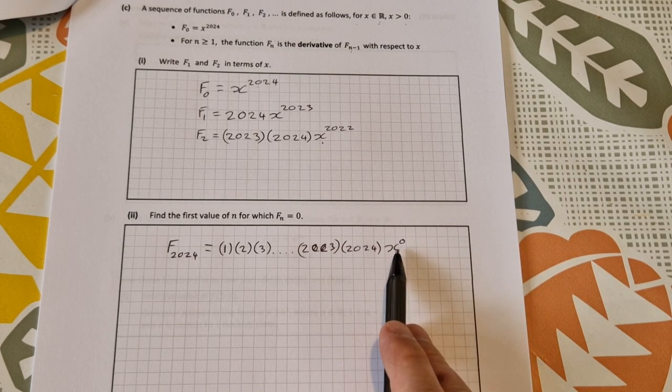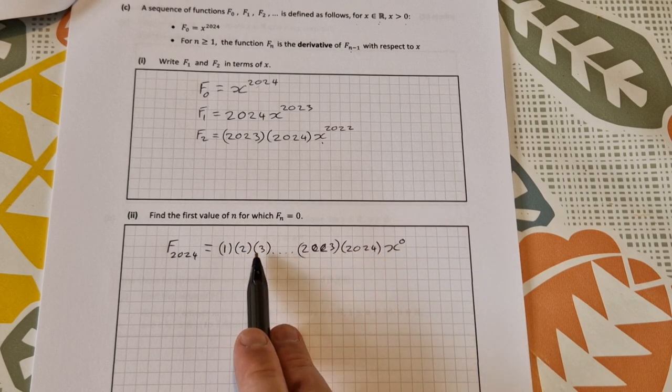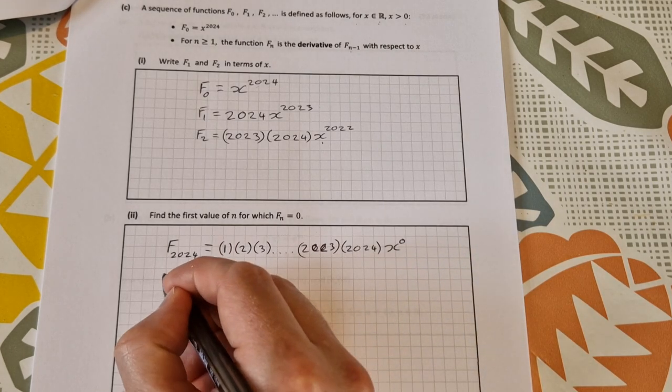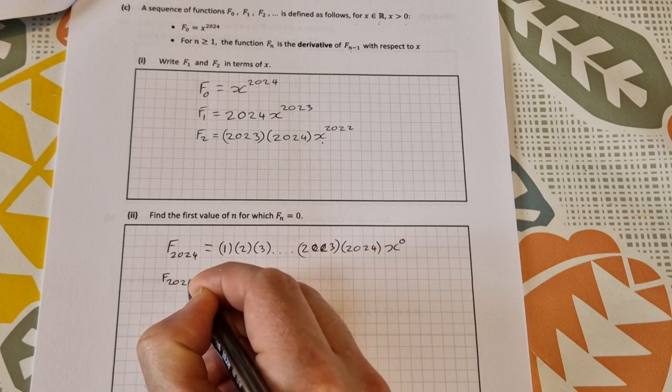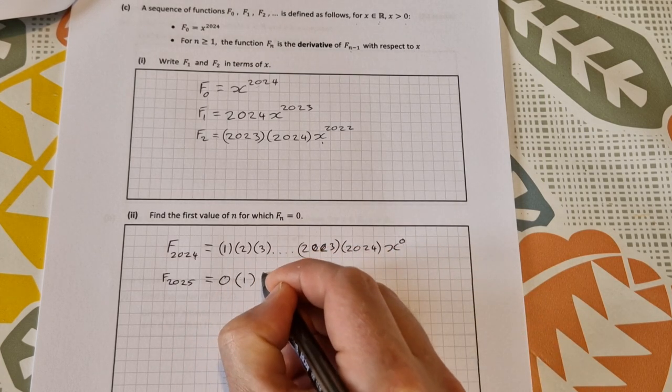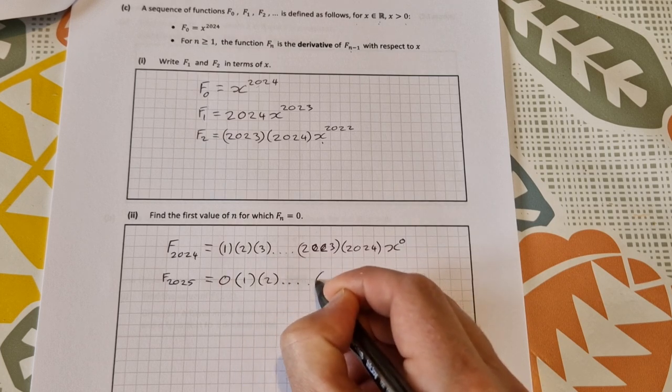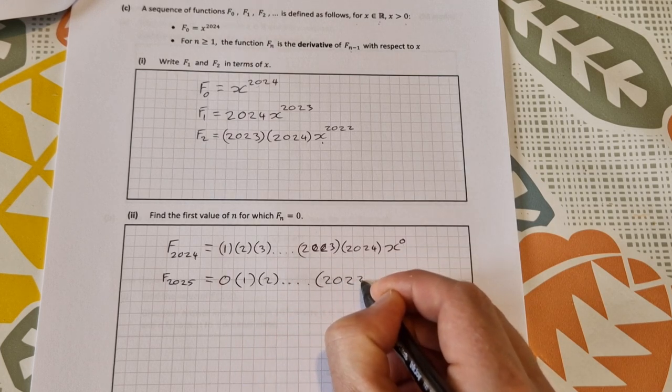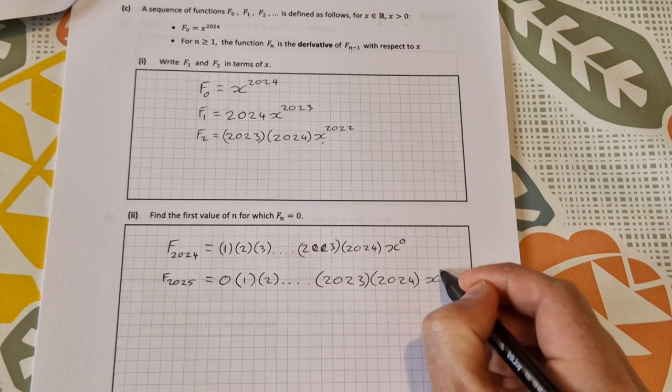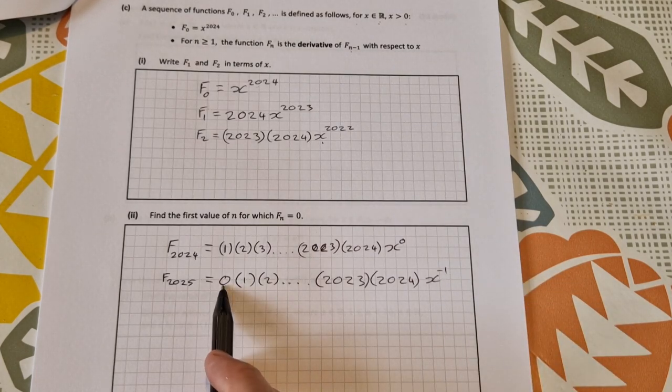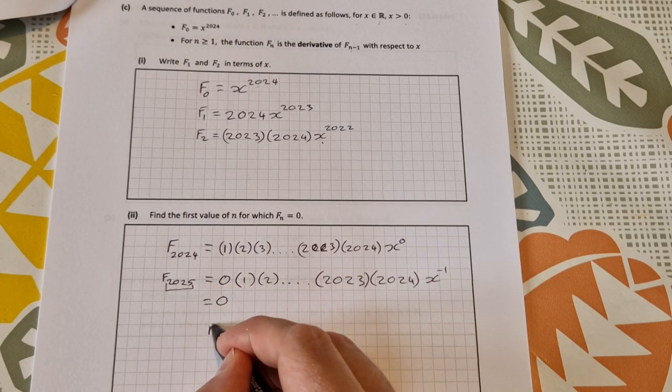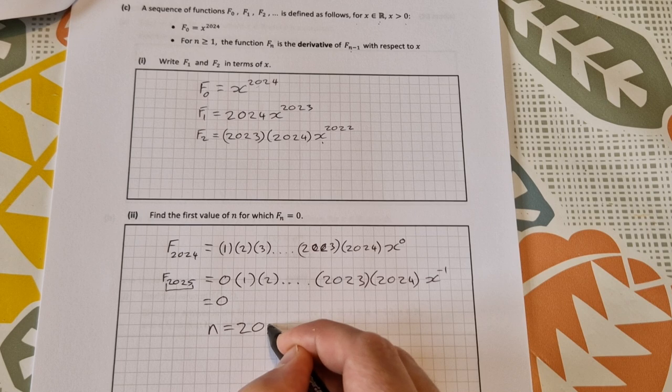So x to the power of 0 is 1, so that's not equal to 0 because it's all those numbers multiplied. But if I differentiate one more time, I'm going to multiply by this 0. So the f of 2025 is equal to multiply down by 0: 0 times 1 times 2 dot dot dot times 2023 times 2024, and that'll be times x to the power of minus 1. That doesn't matter because we're multiplying everything and we're multiplying by 0, so it's equal to 0.